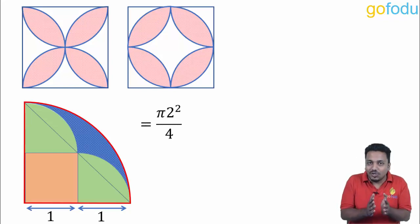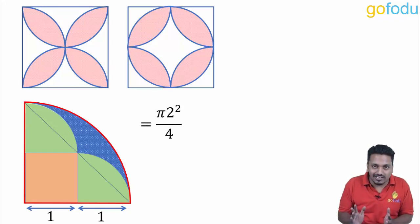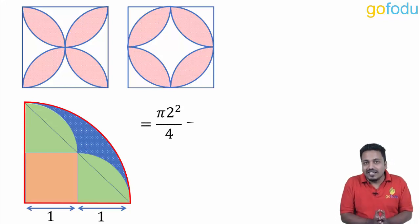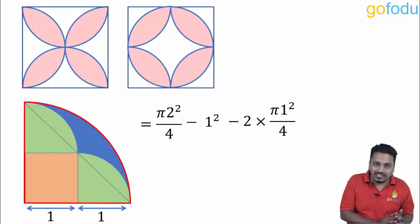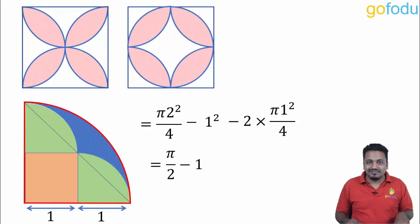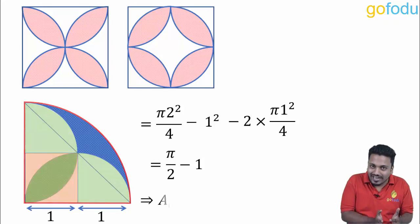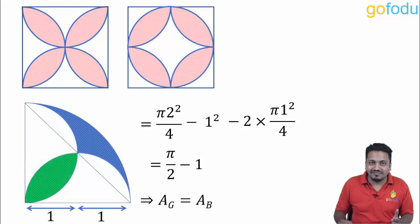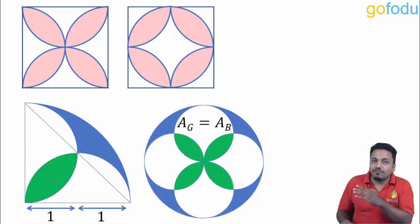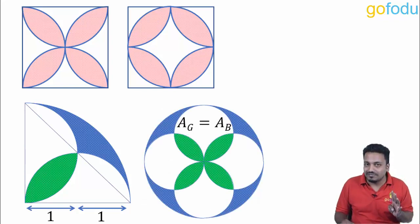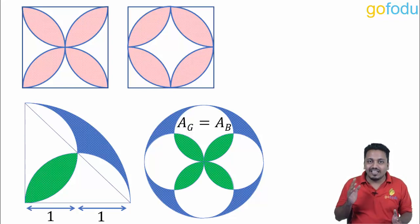So area is pi into two square by four. This is area of bigger quarter circle minus area of square, one square, minus area of two smaller quarter circles, two times pi into one square by four. This is equal to pi by two minus one. Basically area of green region is equal to area of blue region. Same could be said in this figure formed by connecting four of the lamp shaped figures. Area in green is equal to area in blue.